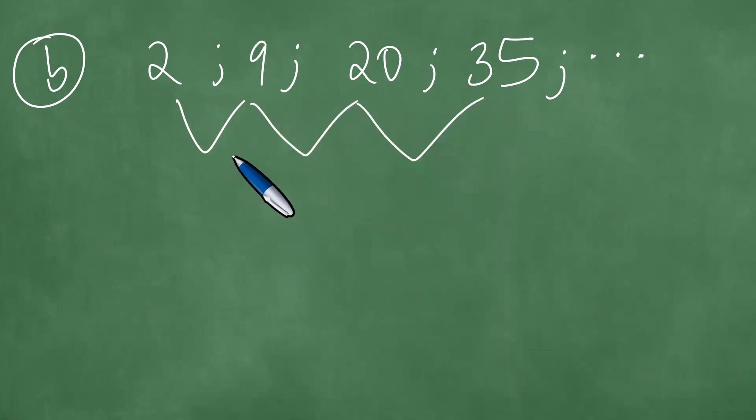Now, if you subtract these, you're going to have 9 minus 2, which is exactly 7, 20 minus 9, which is 11, and then we have 35 minus 20, which is 15. We get further differences here: 11 minus 7 gives us 4, and 15 minus 11 gives a 4.